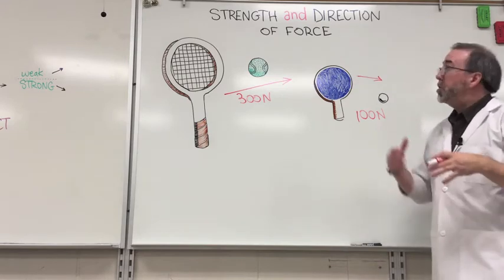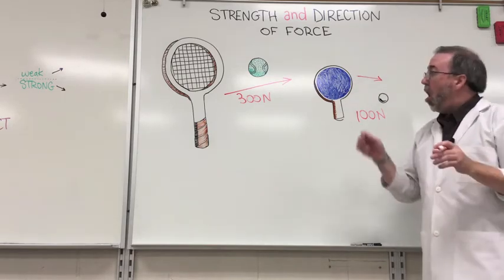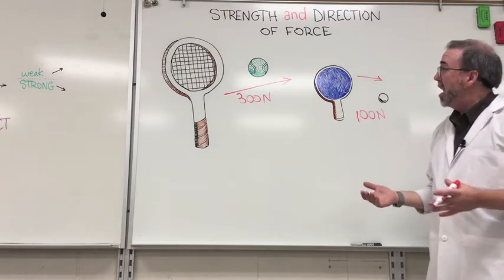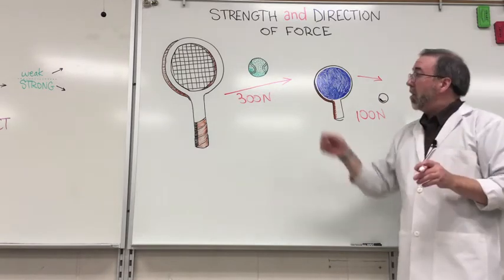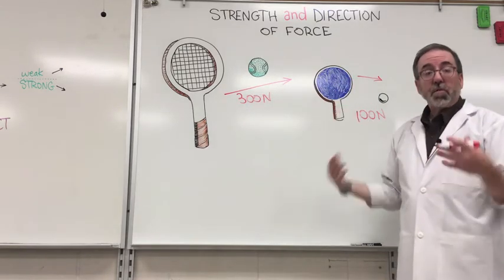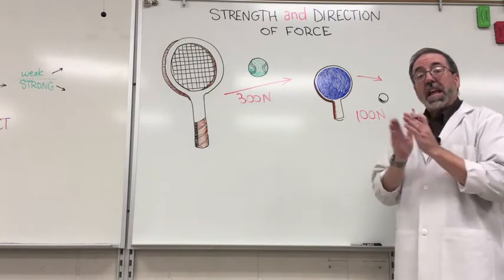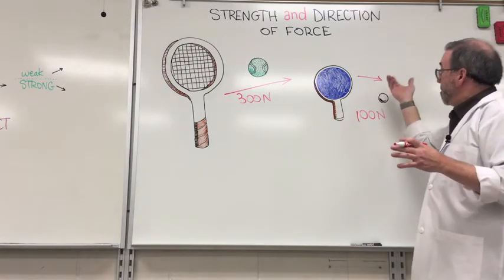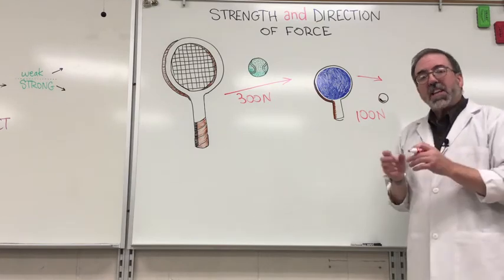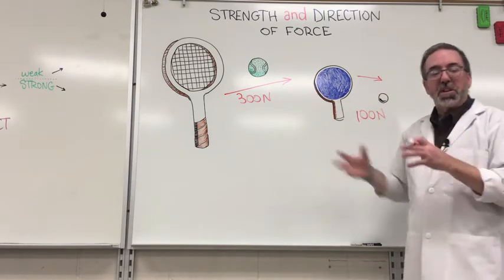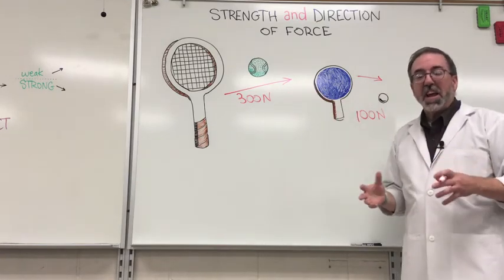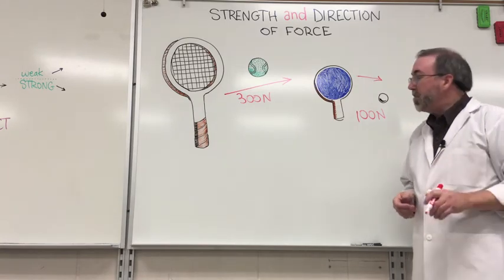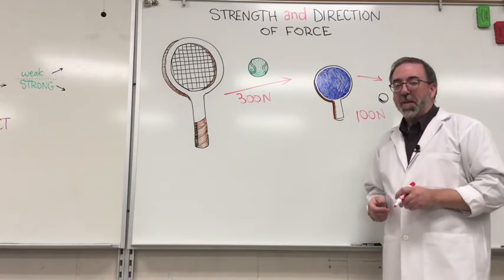So this is how we show strength and direction of force — always using these red arrows. The direction shows where the force is applied, and the length tells you how much force is being applied. It's pretty cool that we have these symbols in science that explain so many things. All right, thanks for coming, and see you next time.